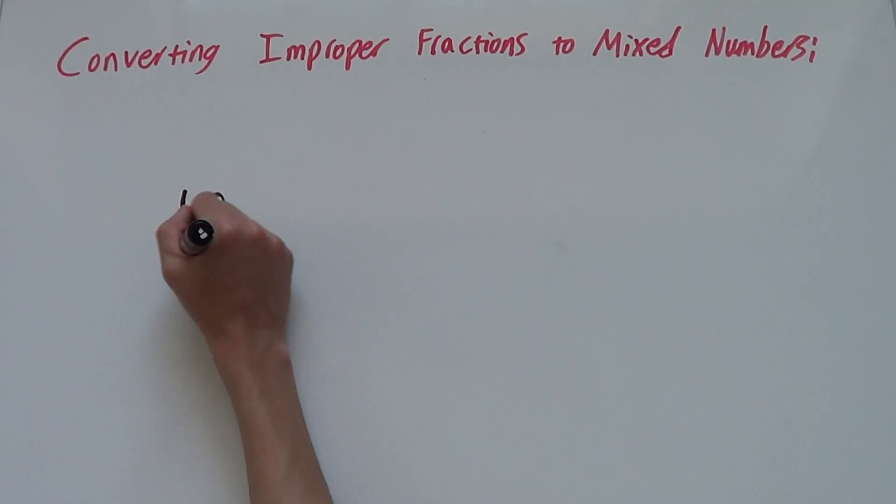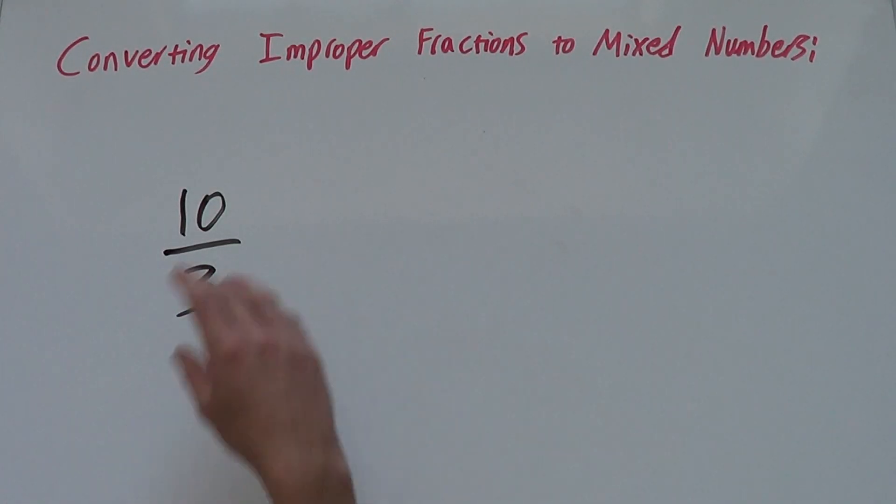So let's say we have 10 over 3 and need to make it into a mixed number. This is an improper fraction because the numerator is greater than the denominator.